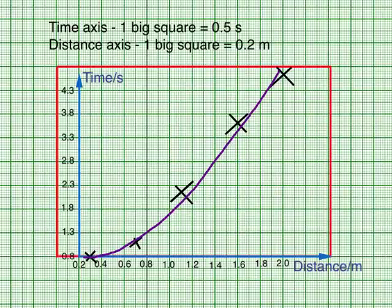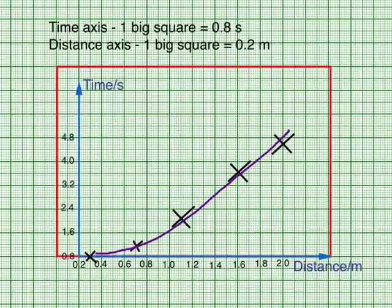What about the one with a smaller scale? This is a graph plotted with a smaller scale of 1 big square is equal to 0.8 seconds. Though the size is comfortably more than half of the graph area in comparison, the previous one is still better in reducing random error.